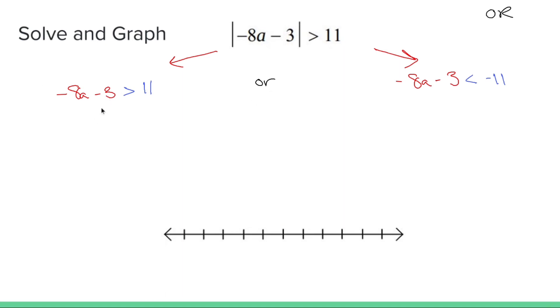So now I have two separate inequalities that I have to solve for with an or in the middle. Let's solve each one individually. Plus 3, plus 3. Negative 8a is greater than 14. Divide by negative 8, divide by negative 8. Gentle reminder: when you divide both sides by a negative, you flip the side. 14 divided by negative 8 is negative 7 over 4, so negative 1.75.